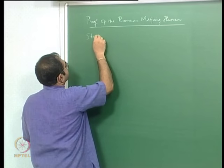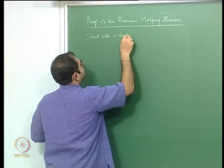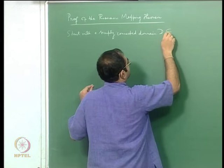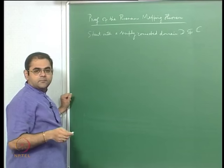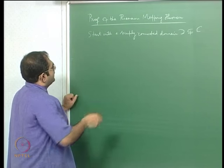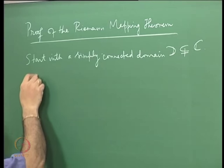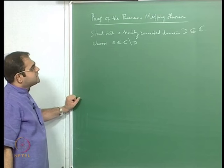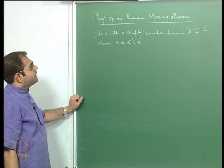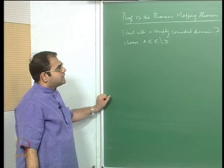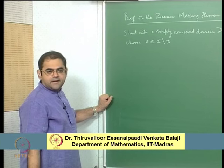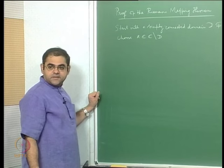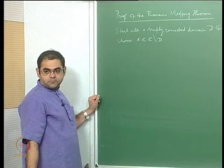Start with a simply connected domain D which is not the whole complex plane. The Riemann mapping theorem is the statement that D is holomorphically isomorphic to the unit disc. In fact, you can find such a holomorphic isomorphism which carries any fixed point of D to the origin, and such an isomorphism is unique provided you fix the derivative of that map at the point being mapped to the origin.